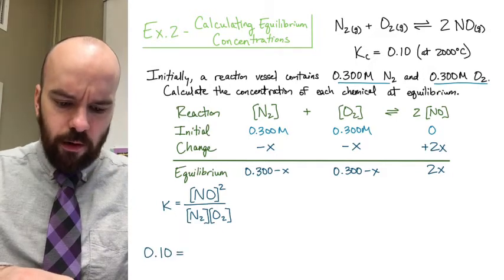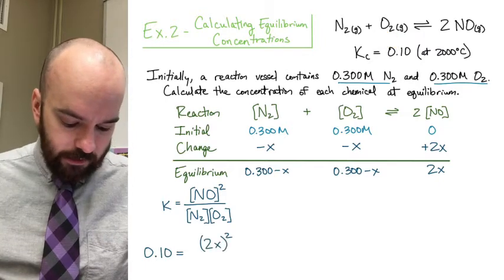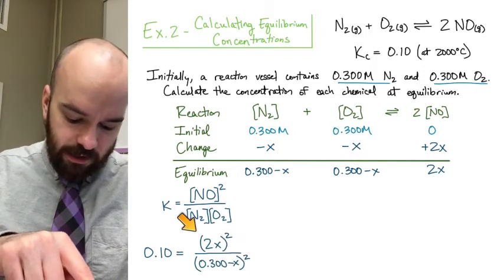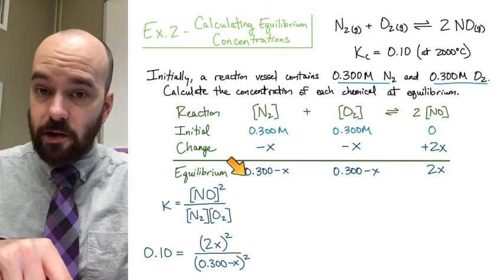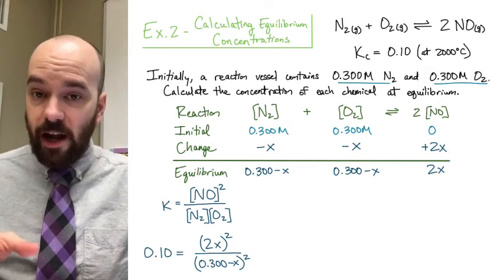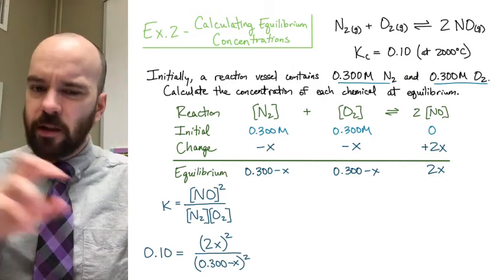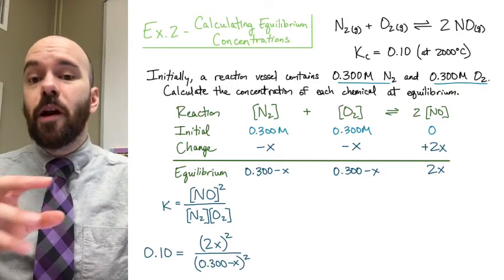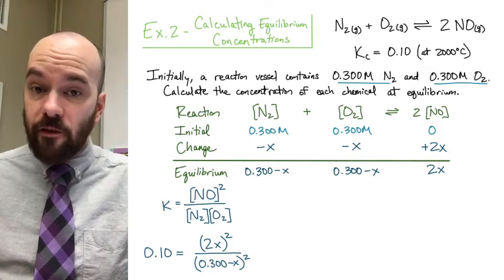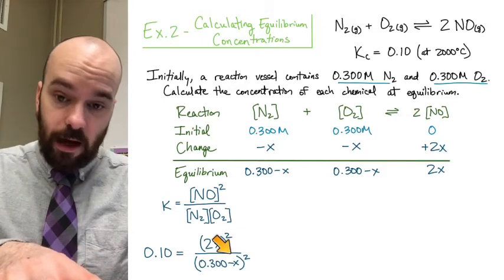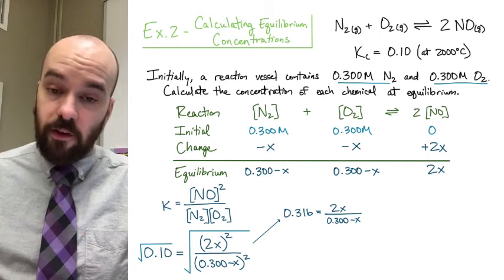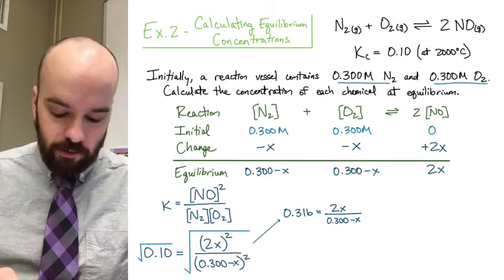We write the equilibrium expression: K equals NO squared over N2 times O2. Substituting in our expressions: 0.1 equals (2X) squared over (0.3 minus X) squared. Since both N2 and O2 have the same expression (0.3 minus X) in this problem, the denominator is (0.3 minus X) squared. The numerator and denominator are both squared, so we can take the square root of both sides. The square root of 0.1 is 0.316, and the squared exponents drop away on the right.